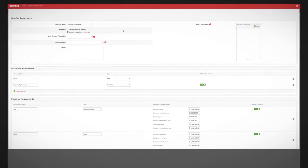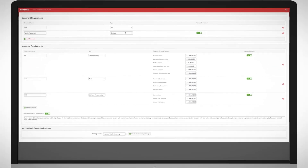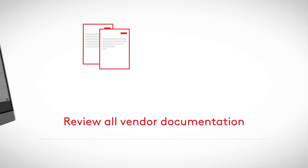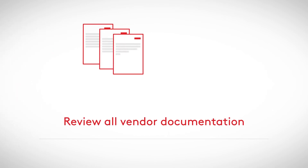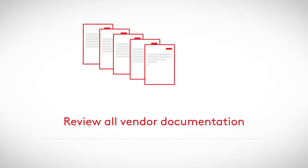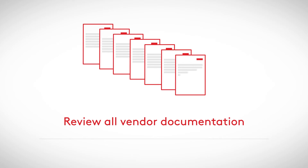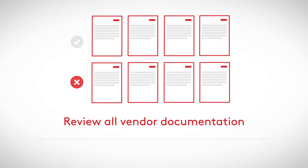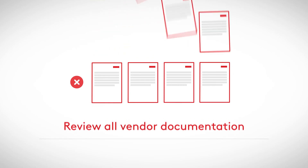Vendor Access lets you know when your compliance standards are met and removes the middleman. You're able to review all vendor documentation in one place, including tax forms, licenses, and proof of insurance, or request a background history report to screen for liens, judgments, bankruptcies, or other red flags.